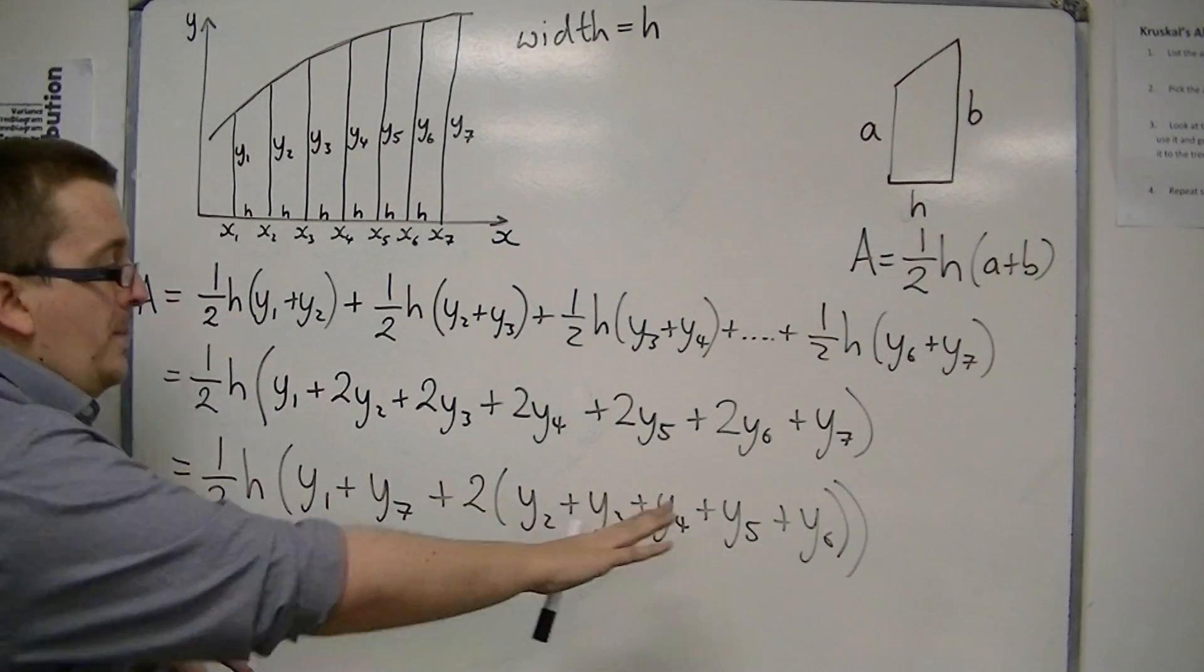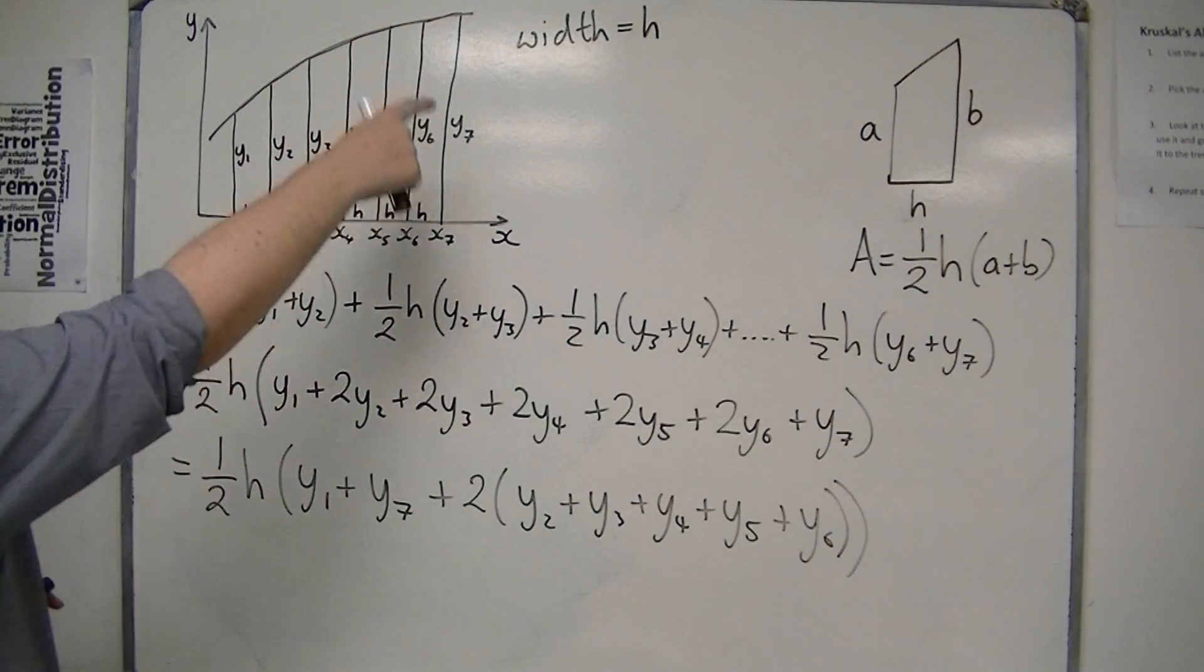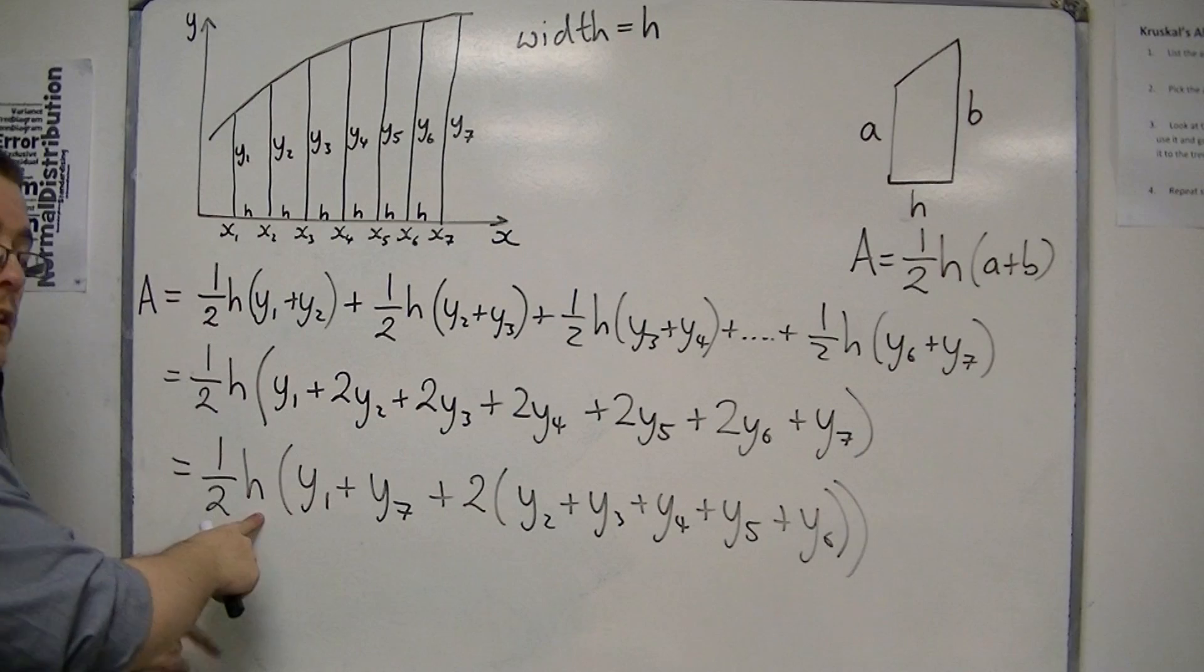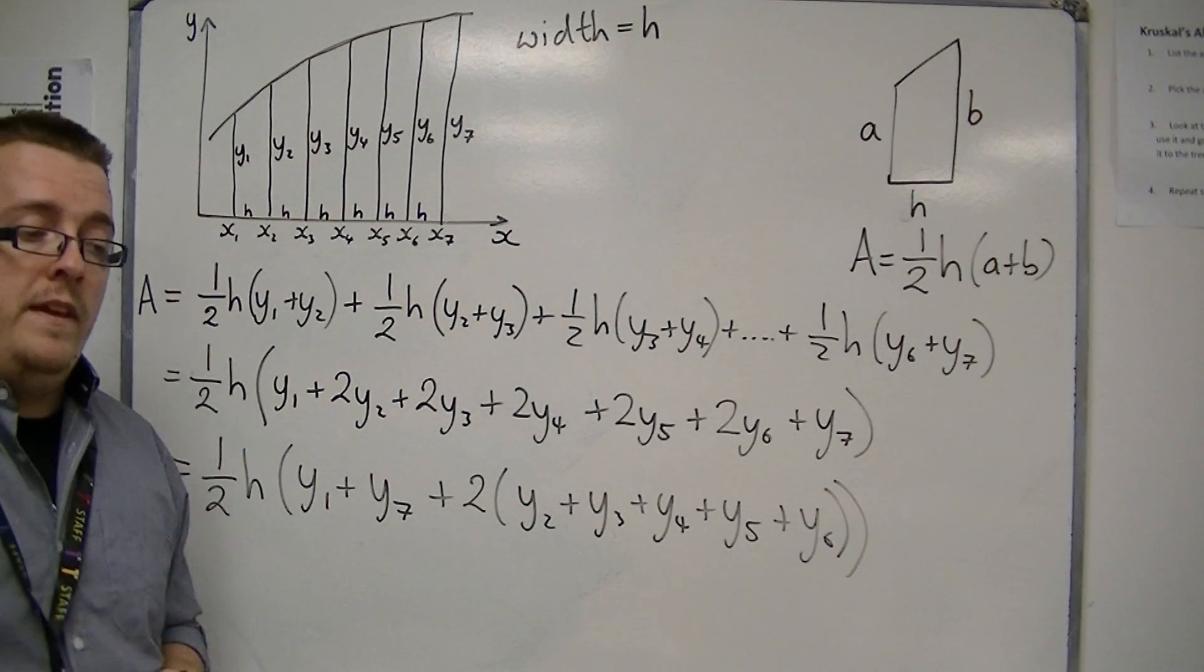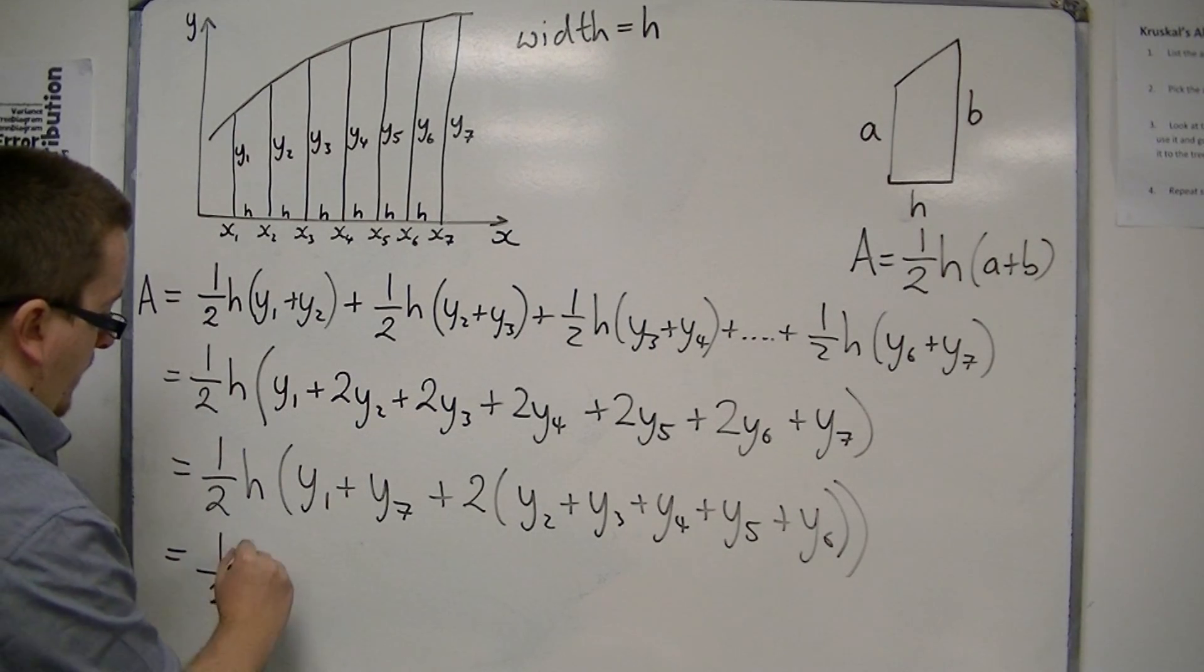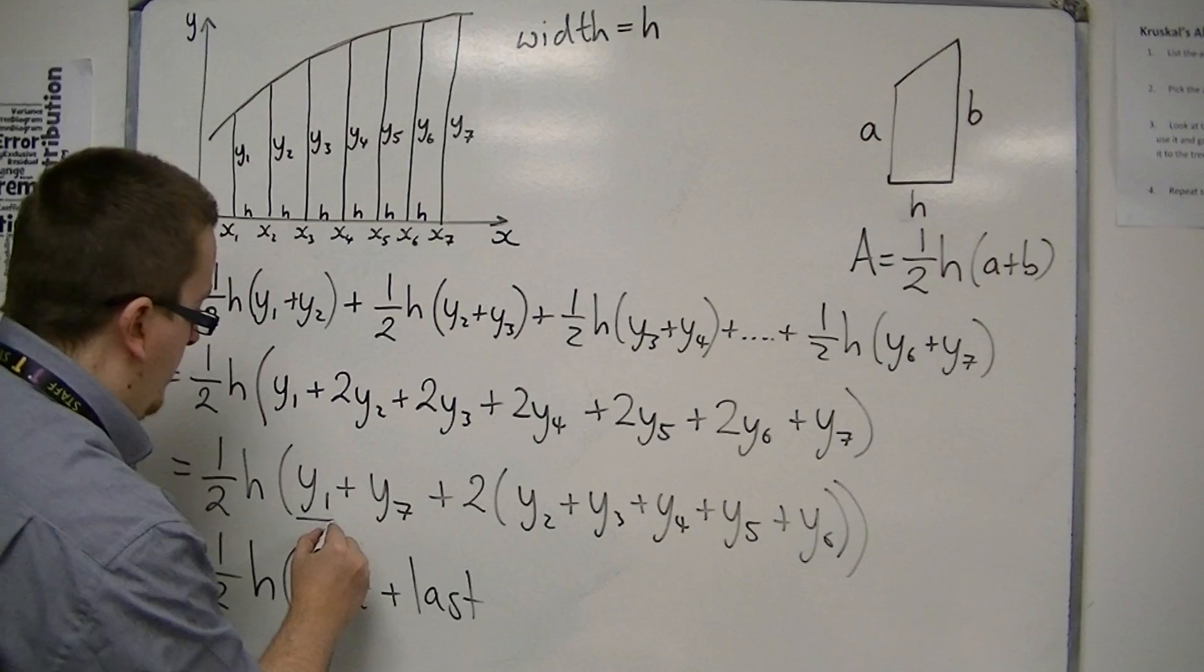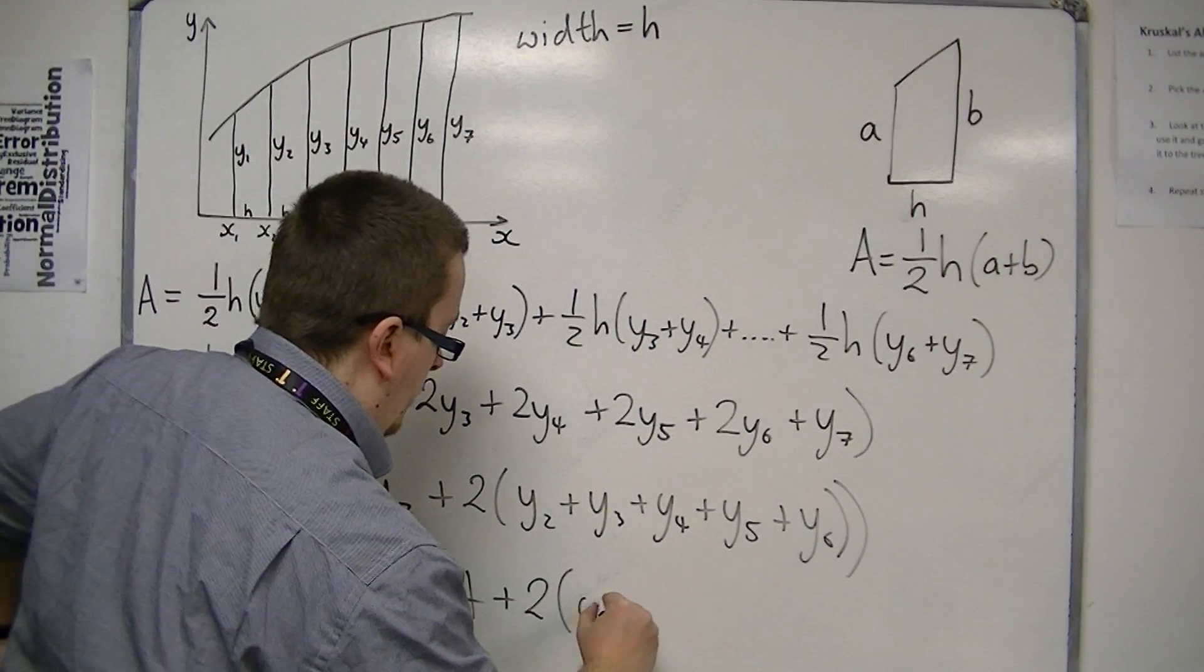And now this gives me a formula that will allow me to work out the area under the curve, give me an estimate, given the y-ordinates and a width of h. And you could rewrite this to be one-half h times the first plus the last, so that's the first plus the last, plus two lots of the rest.